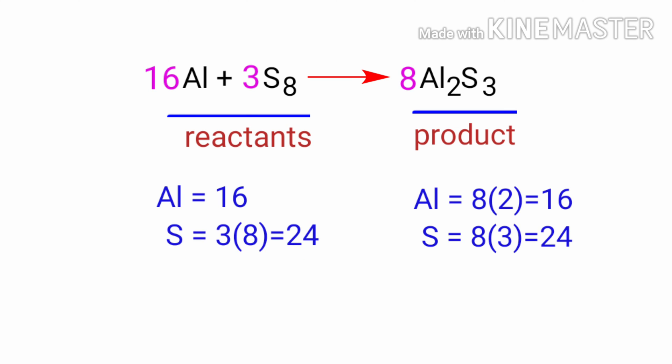The equation is now balanced. There are 16 aluminum atoms and 24 sulfur atoms on both sides.